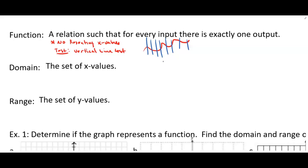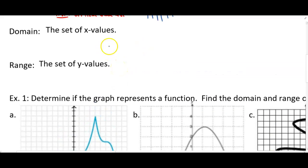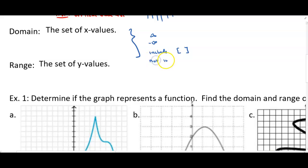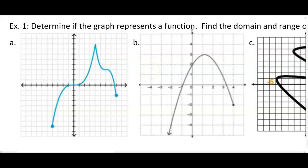The domain and range tell us where the function exists on the x-axis and on the y-axis. The domain is your set of x-values and the range is the set of y-values. When we write domain and range, we use infinity and negative infinity. When we include a value we use a square bracket; if it's not included we use round brackets. Anytime we use infinity, we use round brackets.